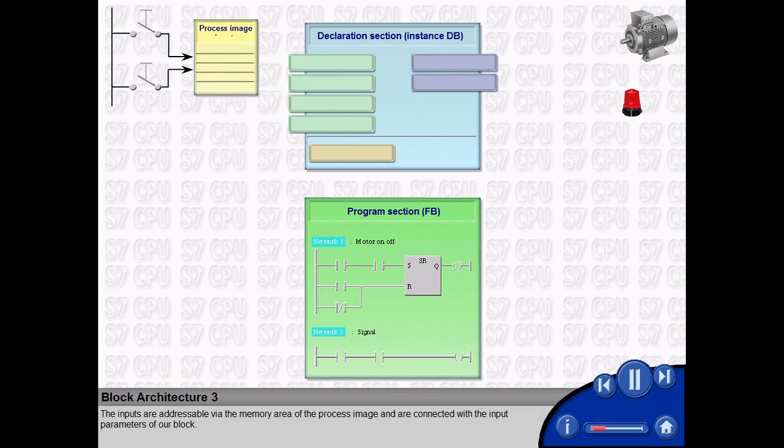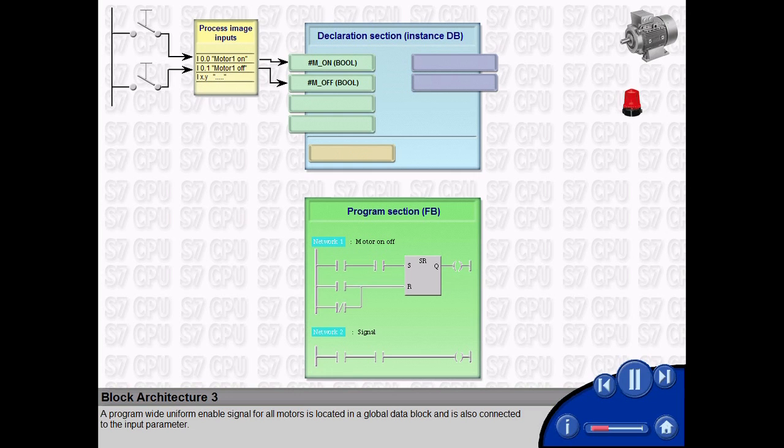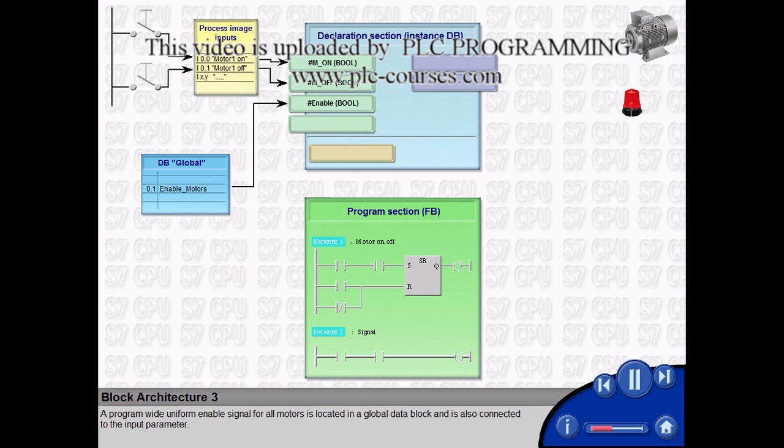The inputs are addressable via the memory area of the process image and are connected with the input parameters of our block. A program-wide uniform enable signal for all motors is located in a global data block and is also connected to the input parameter.